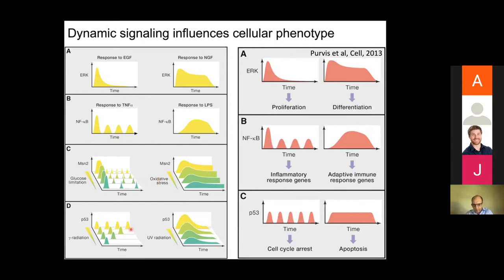Last week we learned about P53 regulation. These different patterns of signaling dynamics can lead to very different cell phenotypic outputs — proliferation, differentiation, cell cycle arrest, or apoptosis.